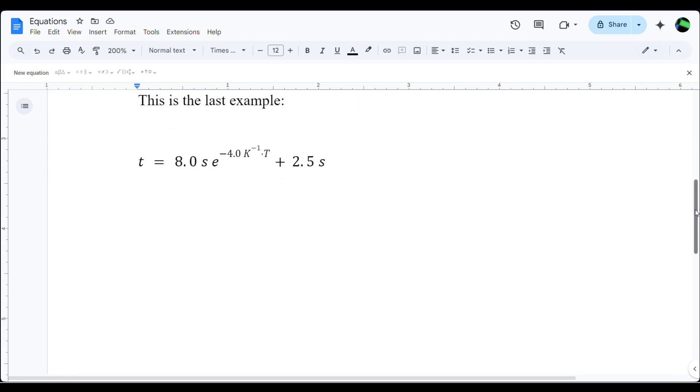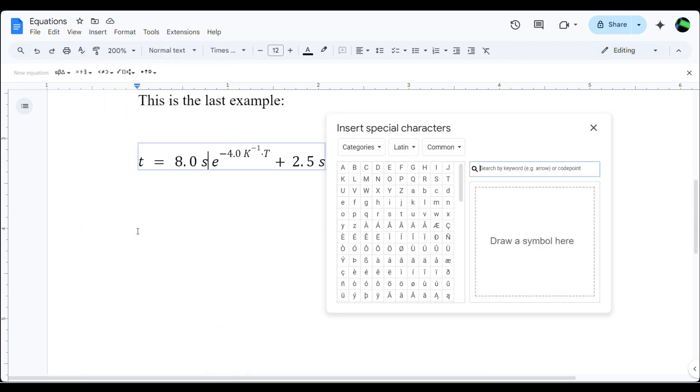Let's do this last example. That T represents time, leave it italicized. And then 8.0 S—that S represents seconds, so that should be non-italicized.